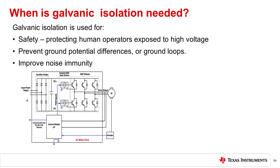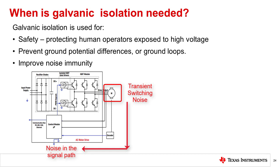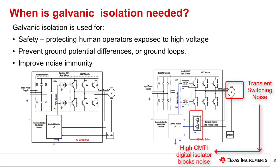The third reason galvanic isolation is most commonly used is to improve circuit noise immunity. While ground loops can be a category of noise sources, a primary source of noise interference is transient behavior within the system. For example, when transients from motor control switching occur, a high slew rate transient voltage can result on the signal path. This often creates a common-mode voltage transient that requires an isolator with high common-mode transient immunity, or CMTI. CMTI is specified in the vendor datasheet, and the higher the CMTI specification, the better the noise immunity of the device.